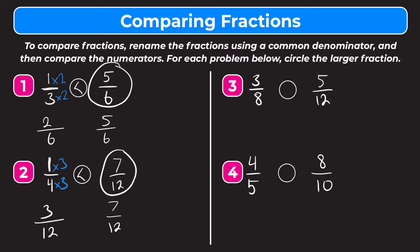Now if you notice in these first two problems, another thing you can do is look and realize that one-third is less than a half and five-sixths is greater than a half. The same in number two — one-fourth is less than a half and seven-twelfths is greater than a half. This can help while doing comparing fractions problems, because if one fraction is greater than a half and one is less, obviously the fraction that's greater than a half is going to be the larger fraction. But you can always rename the fractions using a common denominator and compare the numerators, and you'll always get the right answer.